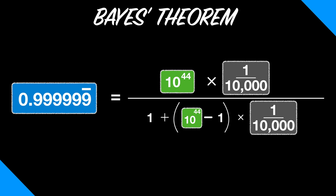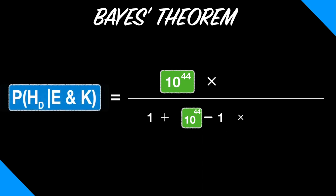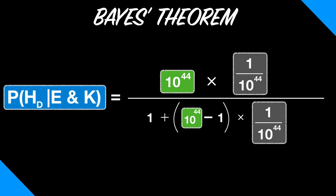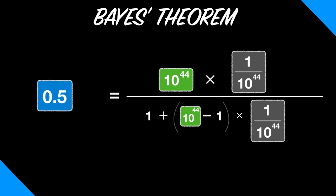In case you're wondering, the prior probability of the design hypothesis would have to be all the way down at 1 in 10 to the 44th, in order for the posterior probability to be just one half.